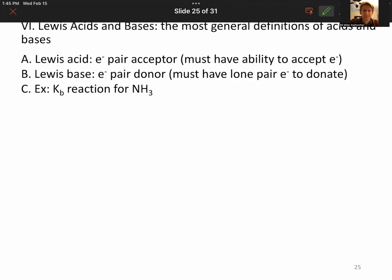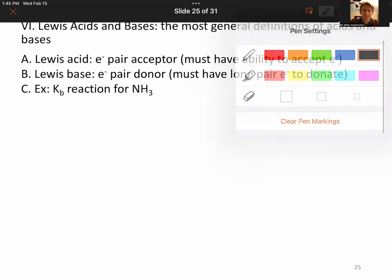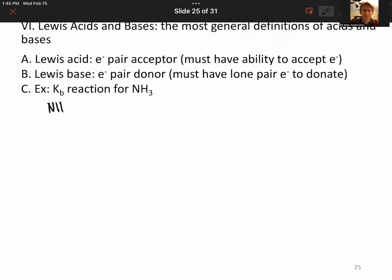So our Kb reaction for ammonia is going to be ammonia plus H2O goes to hydroxide plus ammonium. And what we can do now, since this is the Lewis acid-base theory, we're going to have to draw Lewis structures for everything. If we draw the Lewis structure for ammonia,